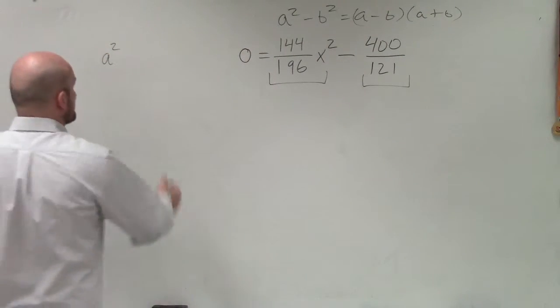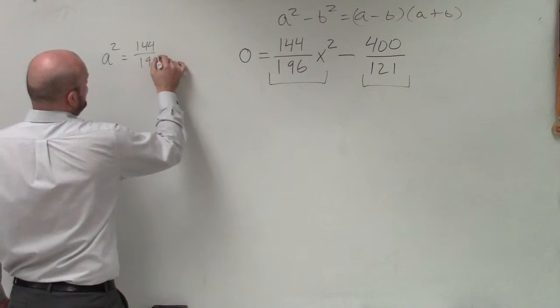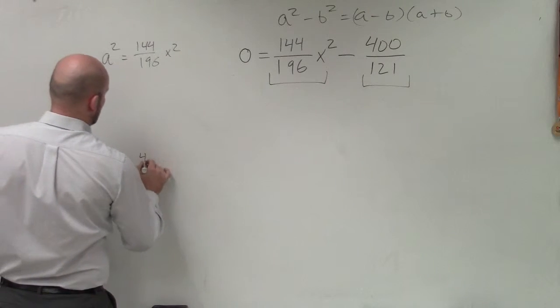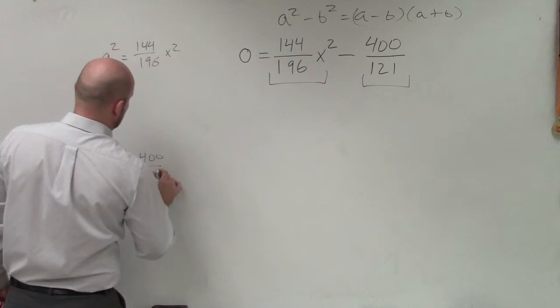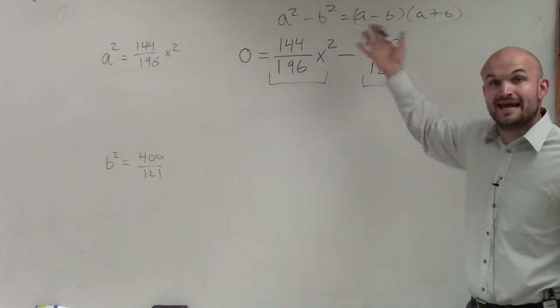So I'll say a squared equals 144 over 196 x squared, and b squared equals 400 divided by 121. And again, the purpose of this is we want to be able to find our values for a and for b.